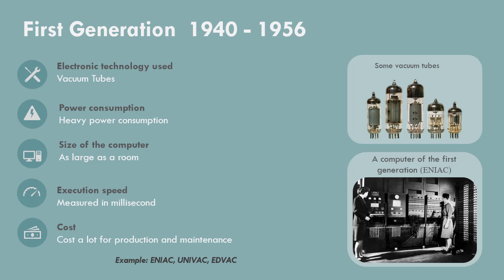1st generation, 1940 to 1956. Vacuum tube is the electronic technology used in the 1st generation. A large amount of vacuum tubes — about 18,000 — were used, and they emitted a lot of heat, which required a cooling system to control it, leading to heavy power consumption. The size of the computer was as large as a room, and execution speed was measured in milliseconds. It cost a lot for production and maintenance. Examples include ENIAC, UNIVAC, and DEVAC.